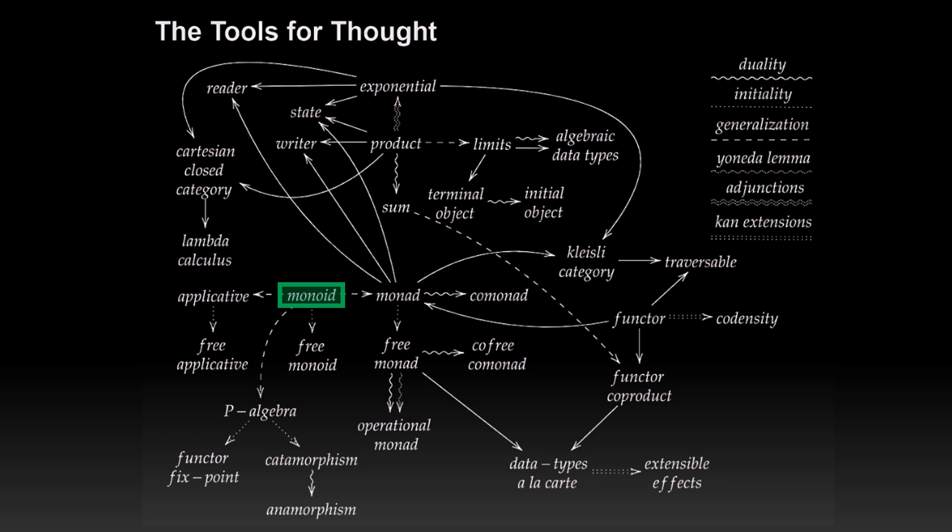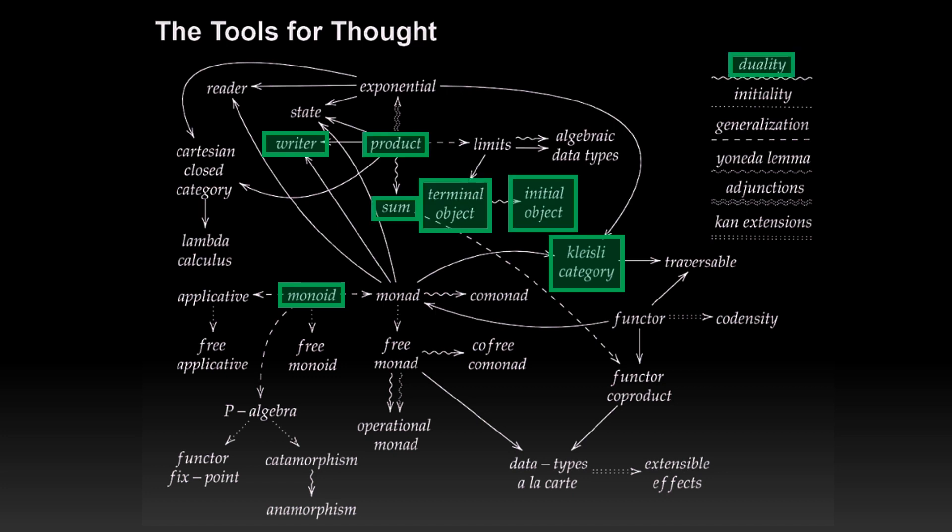And we're just covering what each of these chapters covers from this diagram. So in Chapter 3, we covered Monoid. In Chapter 4, we covered Kleisli Category and Writer. In Chapter 5, last week's video, we covered Product, Sum, Terminal Object, Initial Object, and Duality.